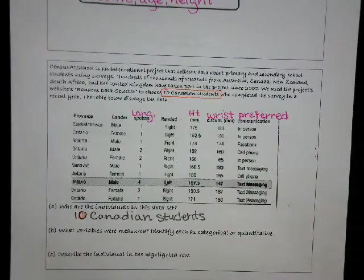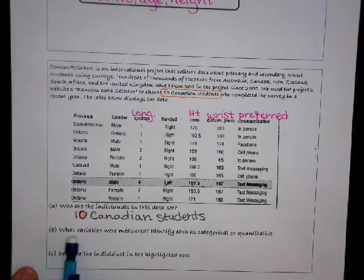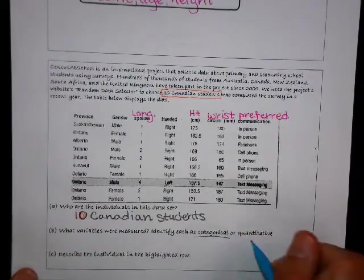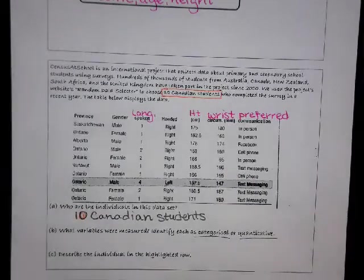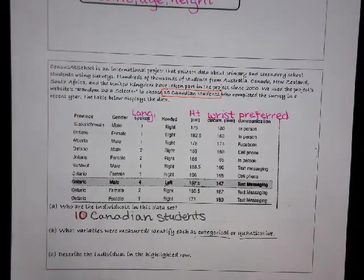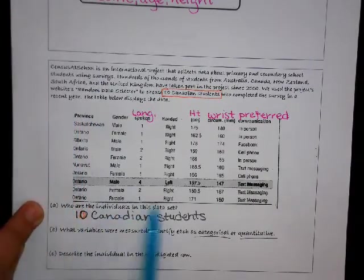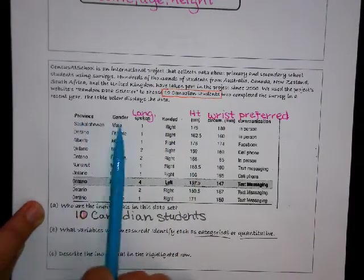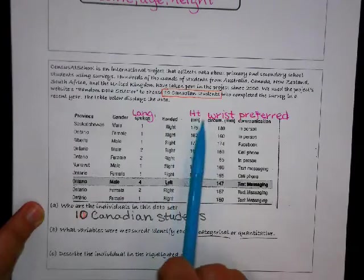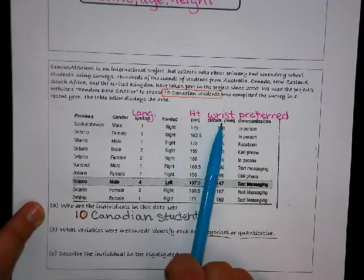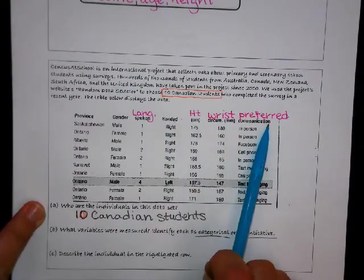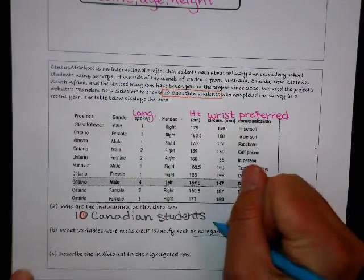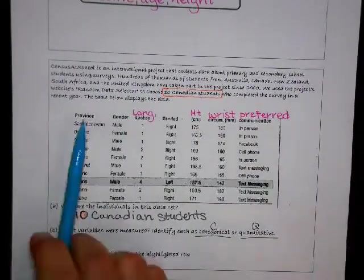So then the next question is what variables were measured and we're going to identify each one as categorical or quantitative. The table tells us what variables were measured, those are the things across the top: province, gender, languages spoken, handed, height, wrist, and then the communication. Rather than write them all down here and put a C for categorical or a Q for quantitative, I'm just going to put a C or a Q above each one.